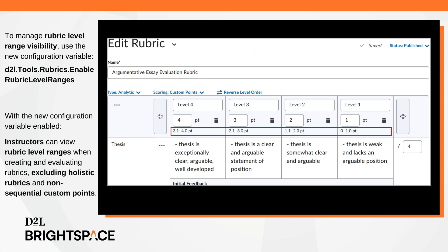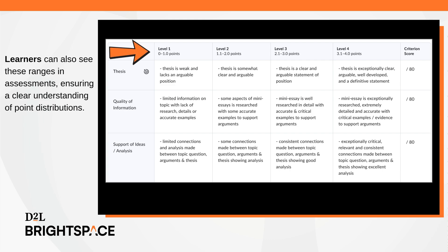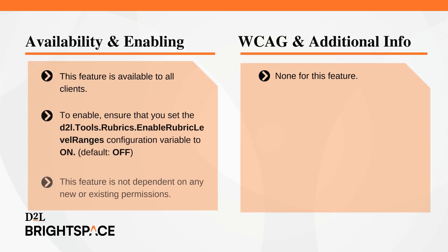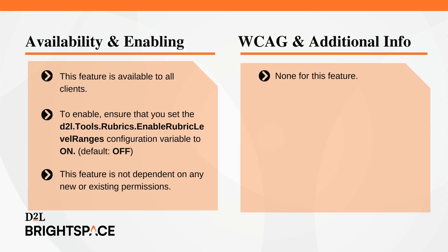When enabled, it provides the following enhancements. Instructors can now view rubric-level ranges while creating and evaluating rubrics, except for holistic rubrics and non-sequential custom points. Learners can also see these ranges in assessments, ensuring clear understanding of point distributions. This feature is available to all clients. To enable, set the D2L.Tools.Rubrics.EnableRubricLevelRanges configuration variable to on. The default is off. This feature is not dependent on any new or existing permissions.